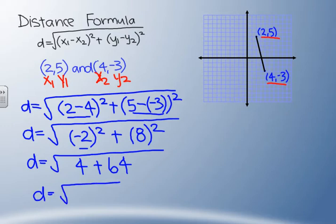Finally, we're going to add what's underneath the square root. So 4 plus 64 is 68. So either you could be finished with this step or you could use your calculator to figure out the answer in decimals, which would be 8.25. And that is how you use the distance formula.